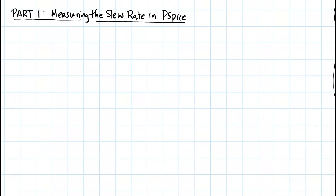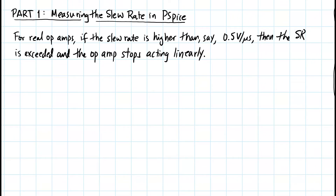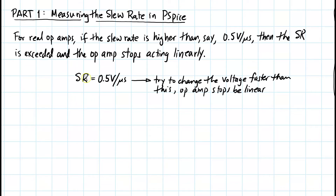Part 1: measuring the slew rate in PSPICE. For real op amps, if the slew rate is higher than 0.5 volts per microsecond, the slew rate is exceeded and the op amp stops acting linearly. In other words, if SR equals 0.5 volts per microsecond and we try to change the voltage faster than this, the op amp is no longer linear.